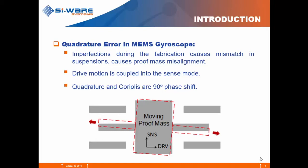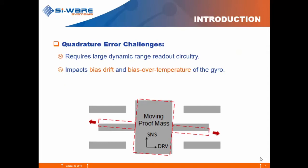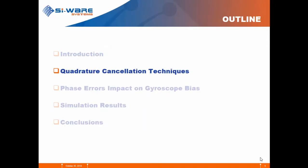The challenges that the quadrature error creates: it requires a large dynamic range from the front end of the ASIC to accommodate both the quadrature signal and the Coriolis signal, and it impacts the bias drift and bias over temperature of the gyro, as we will explain. So what are the proposed quadrature cancellation techniques?